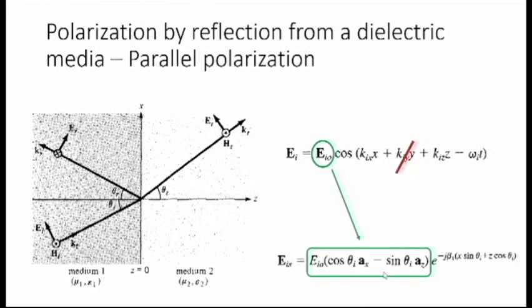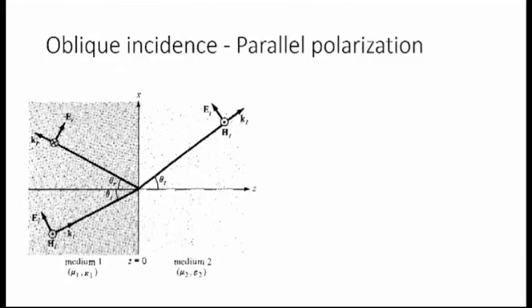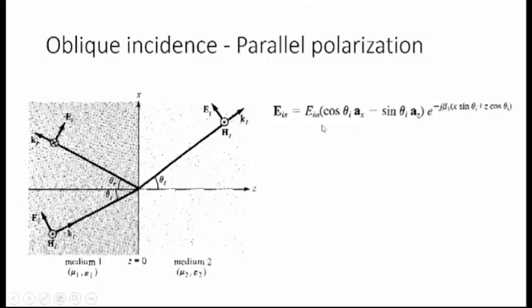So when you have to do this kind of calculation, you have to consider two directions: your direction of propagation and your direction of electric field. This was our incident electric field. Now, what would be the incident magnetic field? To get this information, you need three parameters: one, the amplitude of the field; two, the direction of the field; and three, the direction of the wave itself.